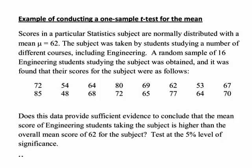For example, here we're told that scores in a particular statistics subject are normally distributed with a mean mu equals 62, so that 62 is our hypothesized population mean. We're then told that the subject was taken by students studying a number of different courses, including engineering. A random sample of 16 engineering students studying the subject was obtained, and it was found that these are the following scores for their subject.